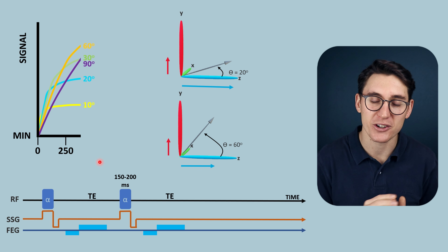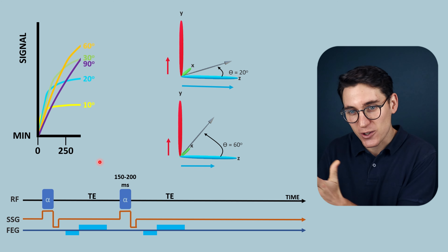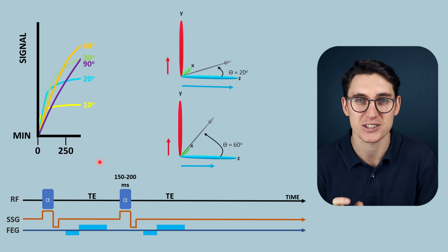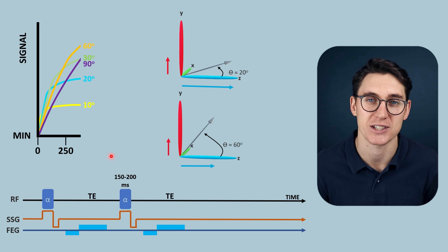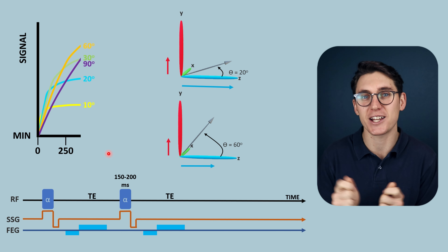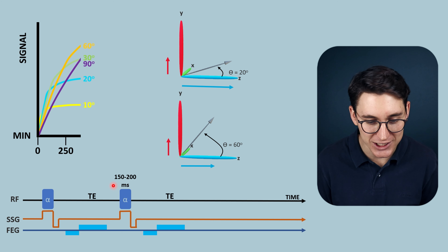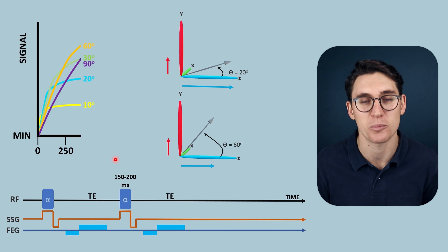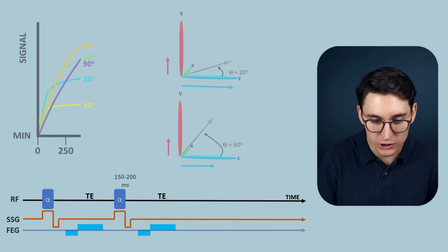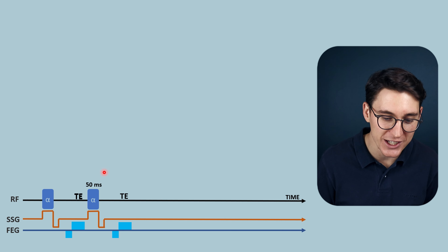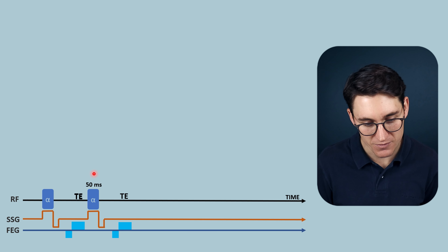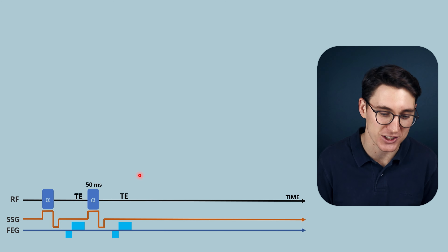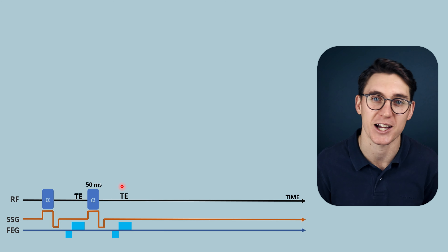The major benefit of gradient echo sequences is that we can image a large region of anatomy in a very short period of time, due to these short TR times. When looking at gradient echo images, we actually use TR times that are even shorter than the examples we've discussed. We often use TR times in the region of 50 milliseconds.